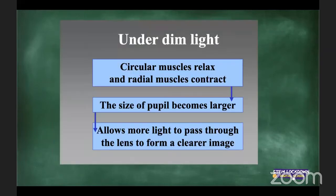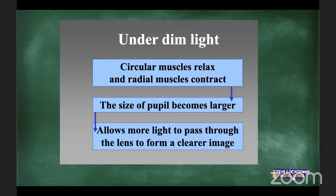In dim light the exact opposite happens: your pupil dilates and becomes larger. Your circular muscles relax, your radial muscles contract. They always work opposite to each other. When the circular muscles relax, the pupil can become larger and more light can enter your eye so you can see in the dark.